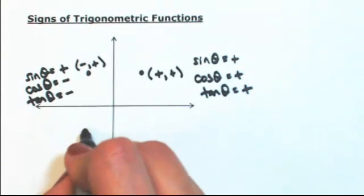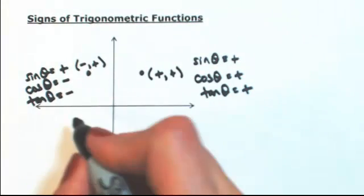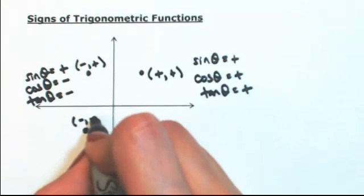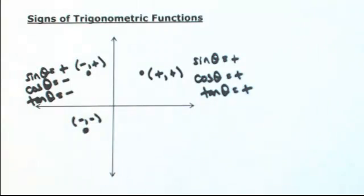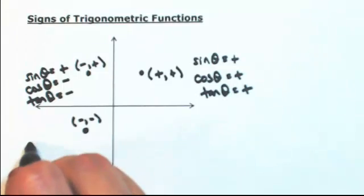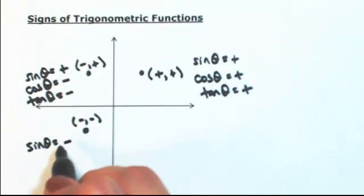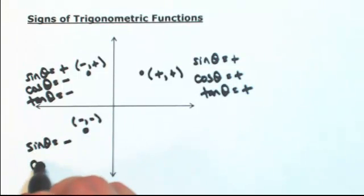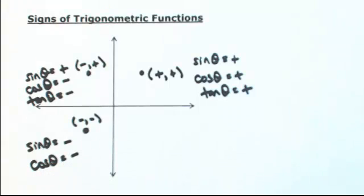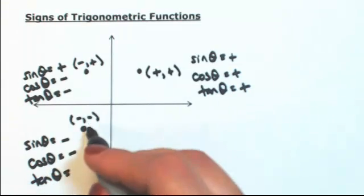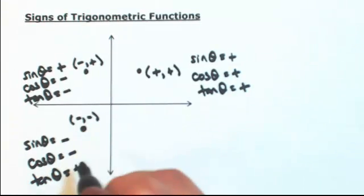In the third quadrant, take a point on the terminal side — both x and y are negative. So sine and cosine are both negative, because the opposite would be negative and the adjacent would be negative, while the hypotenuse is always positive. But the tangent of the angle — opposite over adjacent — two negatives make a positive, so tangent is positive.